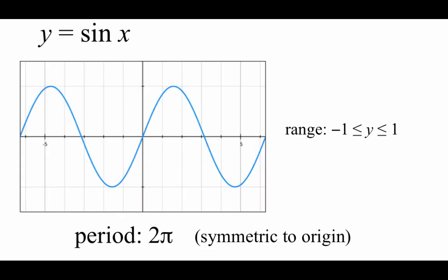Let's take a look at the equation y equals the sine of x. If we were to graph this out, there are a few things to notice. First, the range — the y values — go between negative 1 and positive 1. Thinking about the unit circle, those y values also go between negative 1 and positive 1. The sine equation has a period of 2 pi, meaning after we reach 2 pi on our x-axis, the graph repeats itself. The graph is also symmetric with respect to the origin.